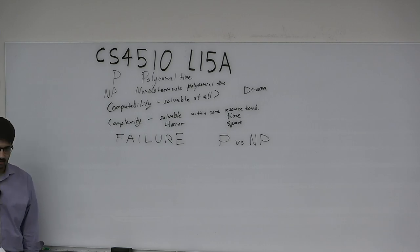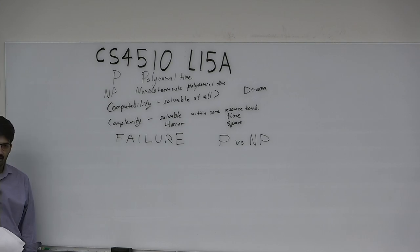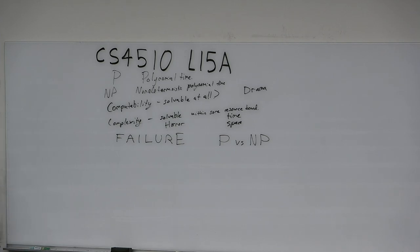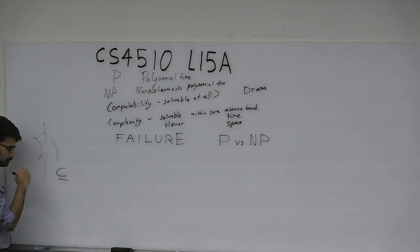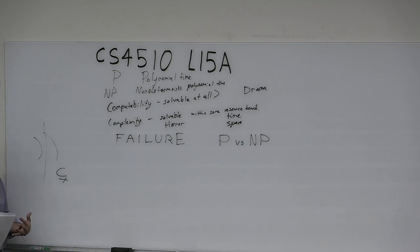We talked extensively about diagonalization as a proof technique. Diagonalization can be used to separate classes — Godel used it to separate the true from the provable, and Turing used it to separate the decidable from the undecidable. Like a sword, diagonalization is great at taking two classes and cutting through them. But not only can diagonalization not separate P from NP — we can actually prove that diagonalization cannot separate P from NP. To me, that is arcane and beautiful.